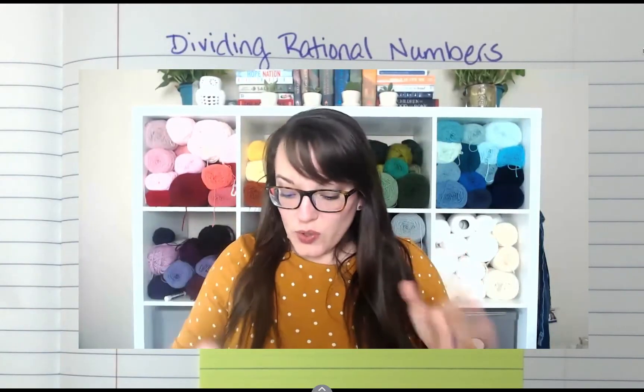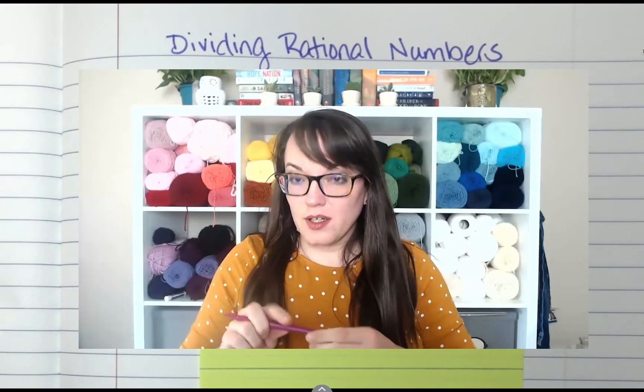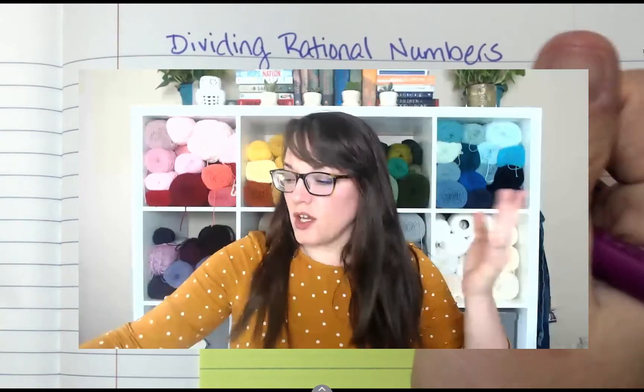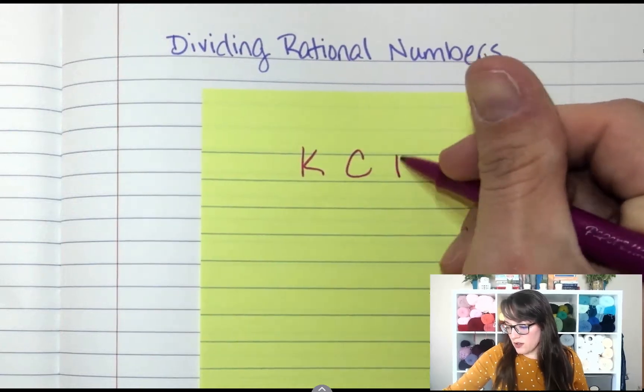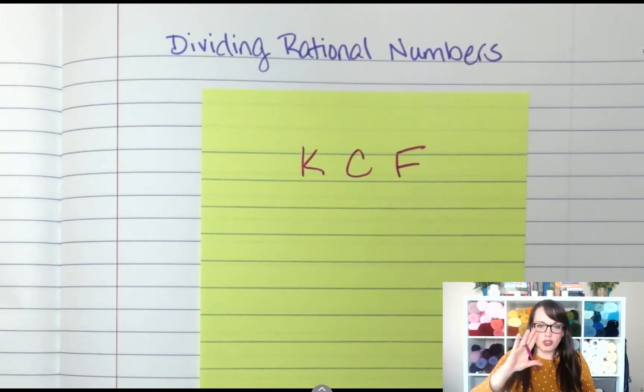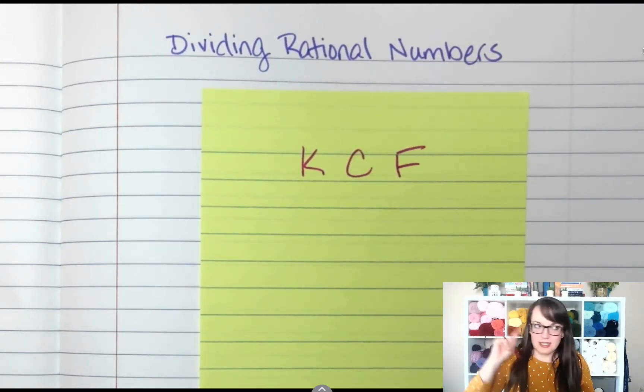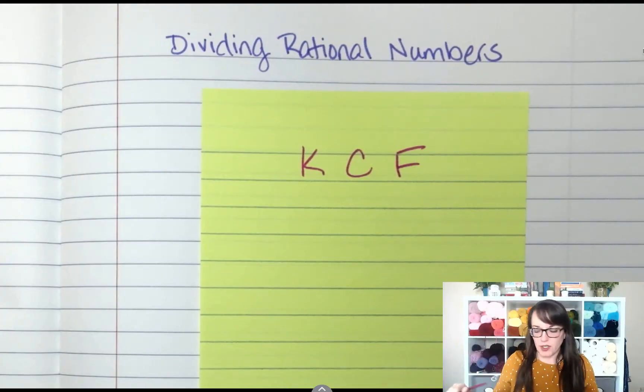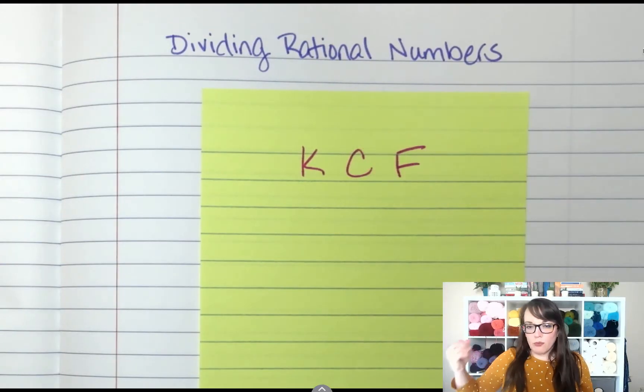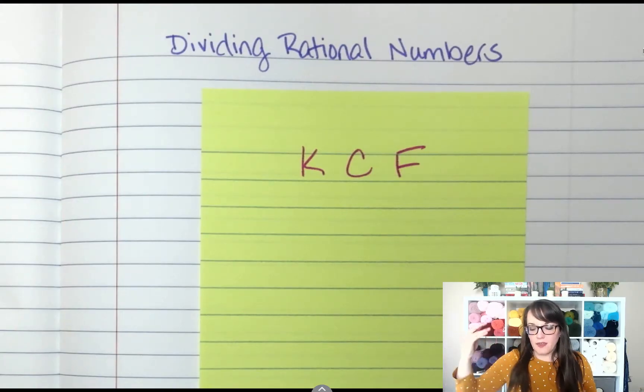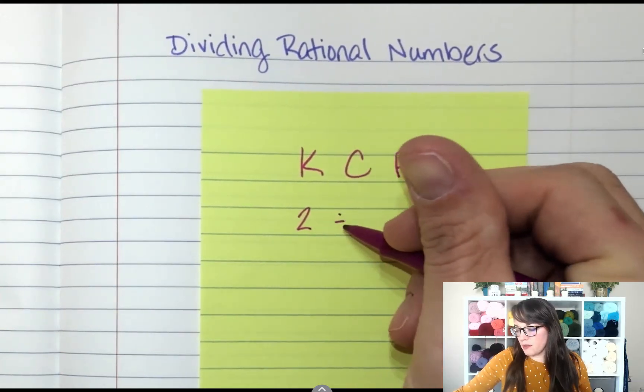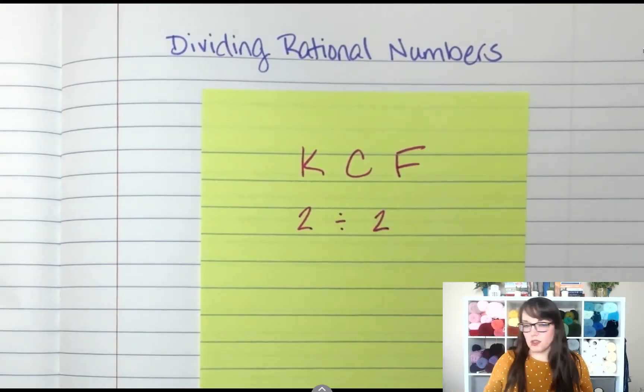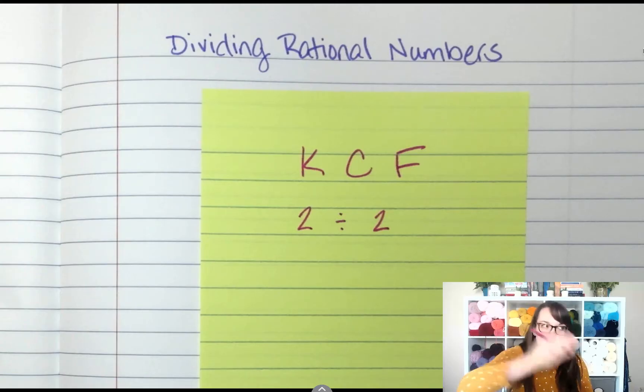So when you were in sixth grade, or whatever grade you were in, you probably heard somebody tell you to keep change flip. Don't write this down. This is just a detour lesson to explain why this works. When you keep change flip, you're multiplying by the reciprocal.